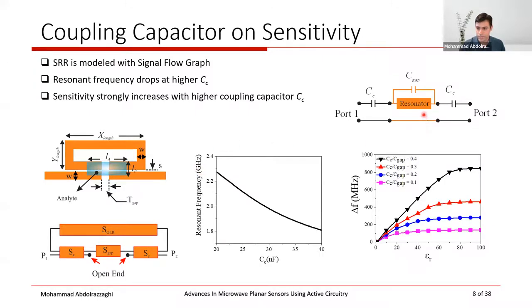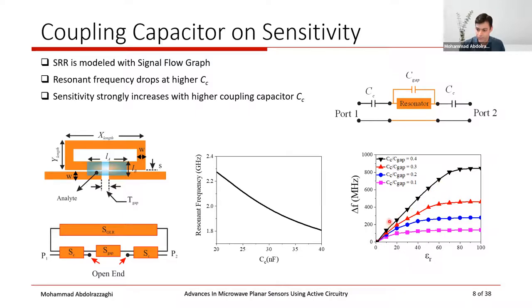If we consider the resonator and the gap as two different sectors that are coupled, with coupling capacitors connecting them to the input and output ports, we find two distinct phenomena. First, a downshift in resonance frequency due to higher coupling. Second, with higher CC over C_gap ratio, the sensitivity of the sensor increases significantly, enabling higher-sensitivity sensors for various applications.